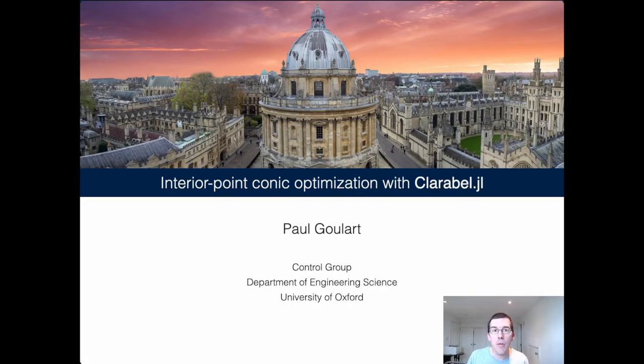Hi, my name is Paul Goulart and this talk is going to be about Clarabel.jl, which is a new convex optimization code written by my group in engineering science at the University of Oxford.